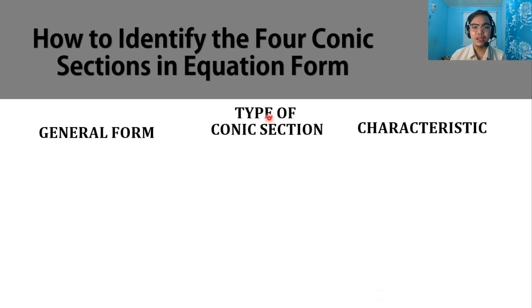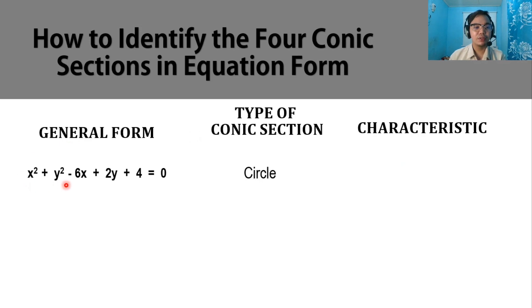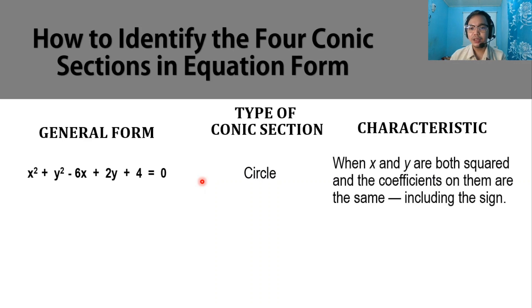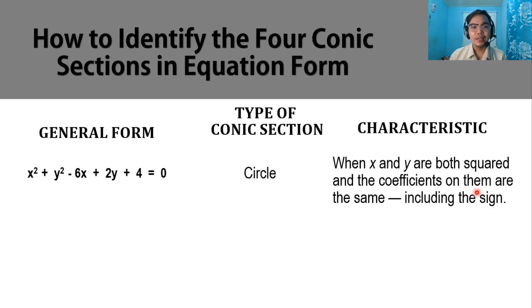From the general form, we identify the type of conic section by its characteristic. For the circle, consider x squared plus y squared minus 6x plus 2y plus 4 equals 0. When x and y are both squared and the coefficients on them are the same including the sign, it is a circle. The coefficient of x squared is 1 and the coefficient of y squared is also 1, so they are both positive. This confirms the general form is a circle.